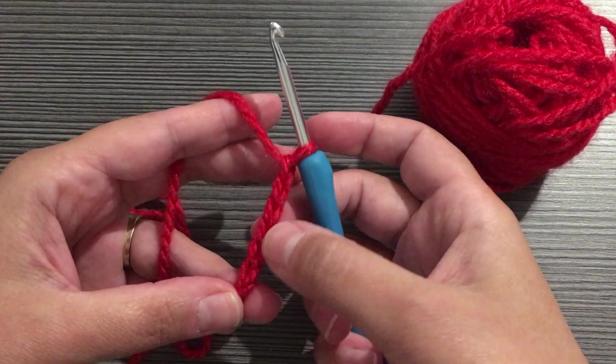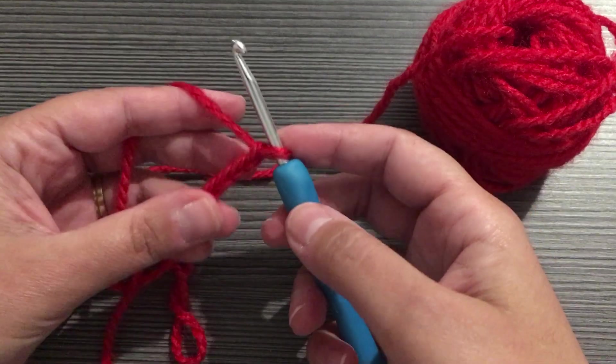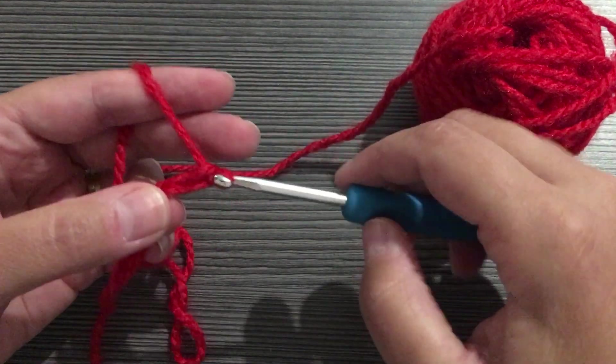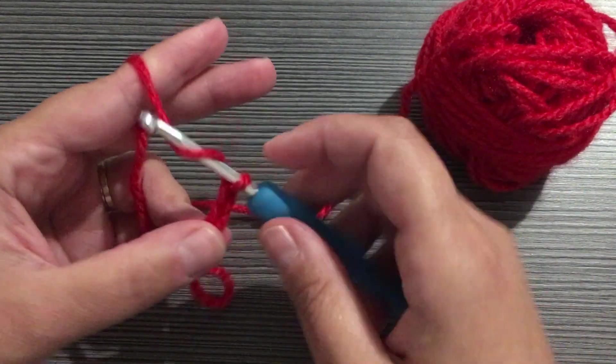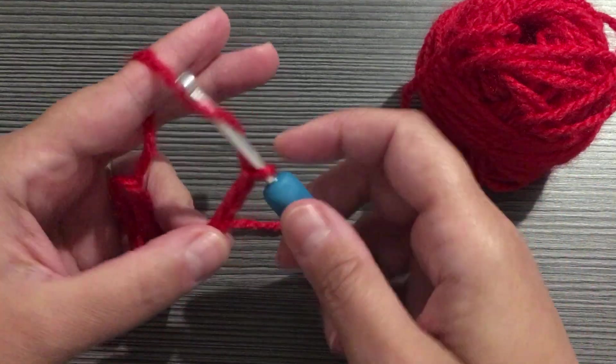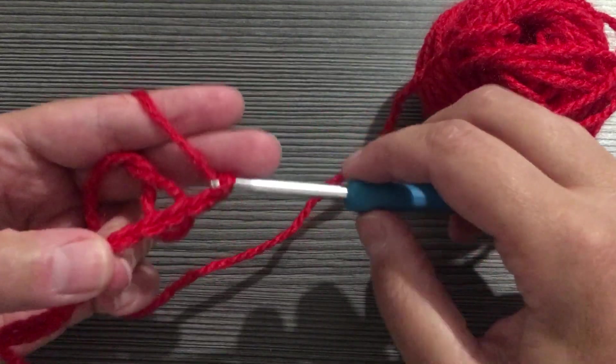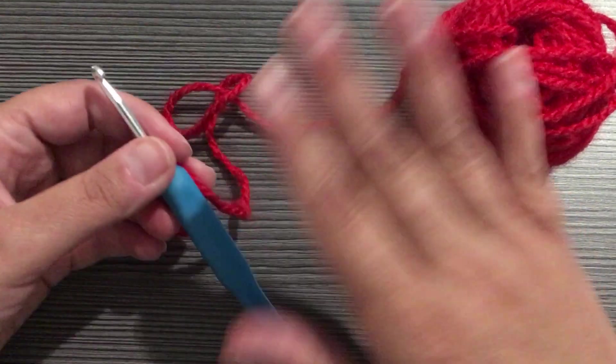Yarn over, pull through the loop. We've got one, two, three, four, five, six. You just keep practicing and I will see you back with the project.